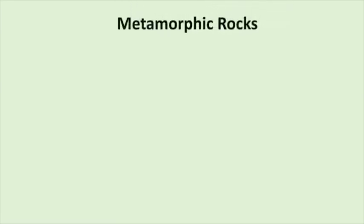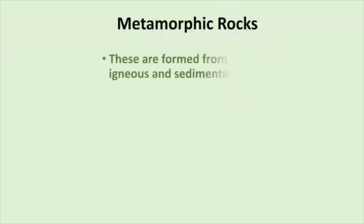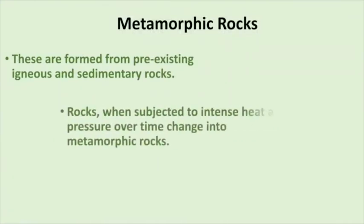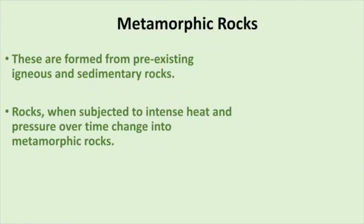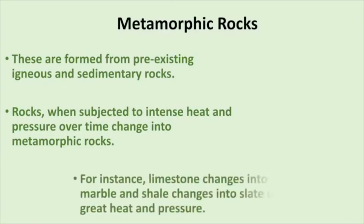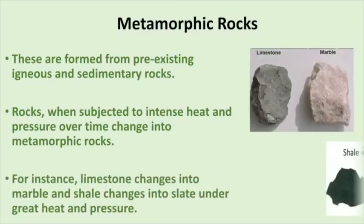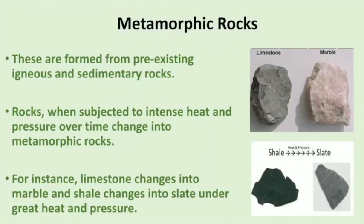The third and last type is metamorphic rocks. These rocks are formed from pre-existing igneous and sedimentary rocks. This happens when rocks are subjected to intense heat and pressure over a long time and then they change into metamorphic rocks. For example, limestone changes into marble and shale changes into slate under great heat and pressure.